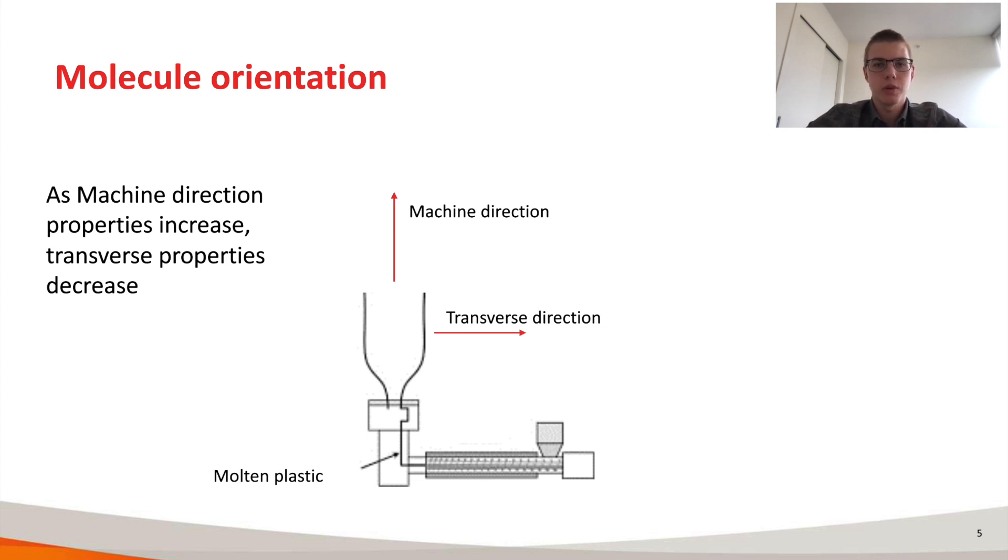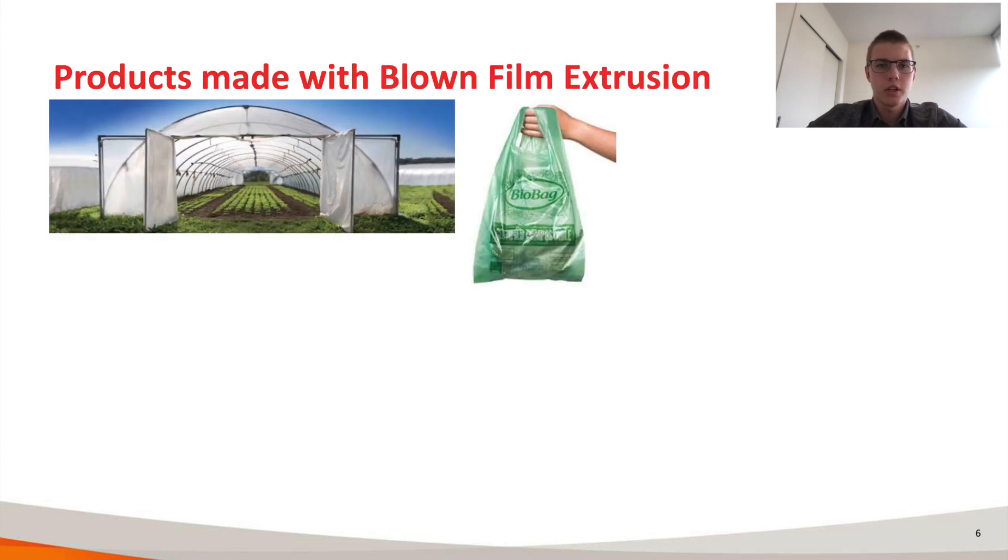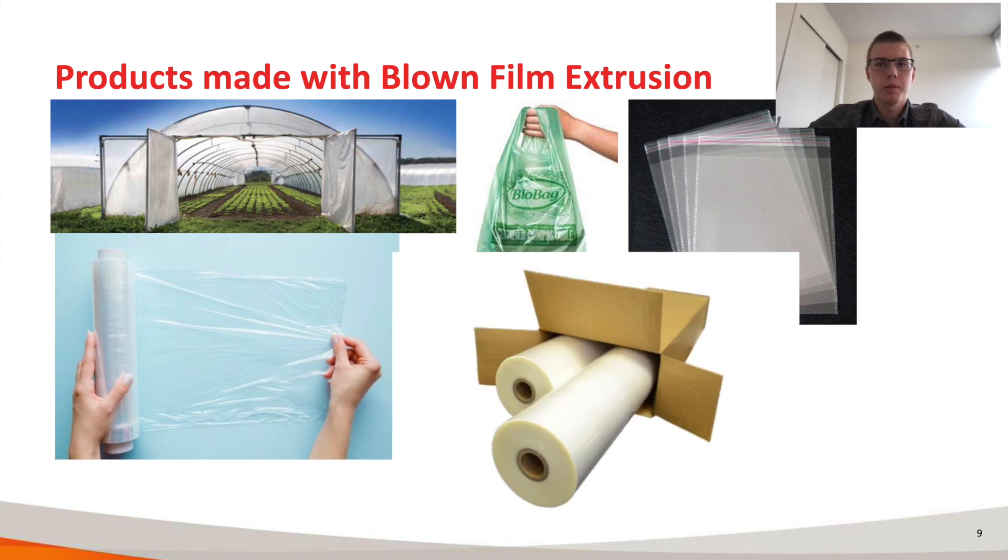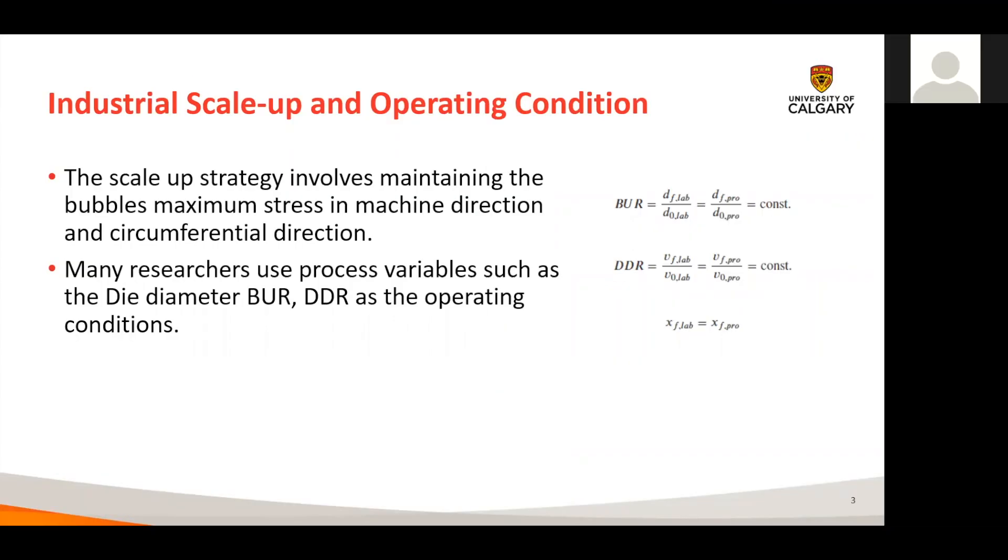The blown film extrusion is mainly used to produce products for packaging industries. Some examples of products are agricultural films, bags, industry packaging, food wrap, laminating film and many others.